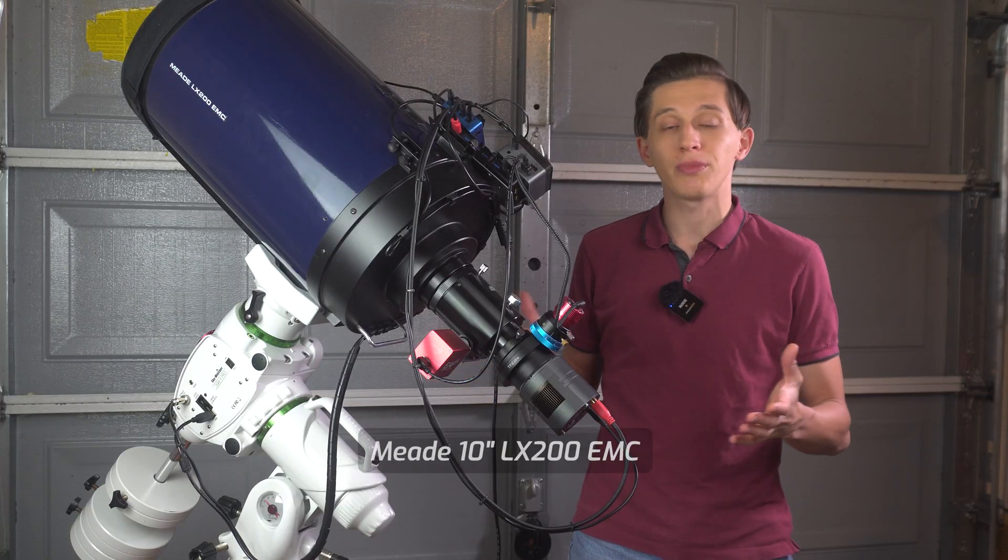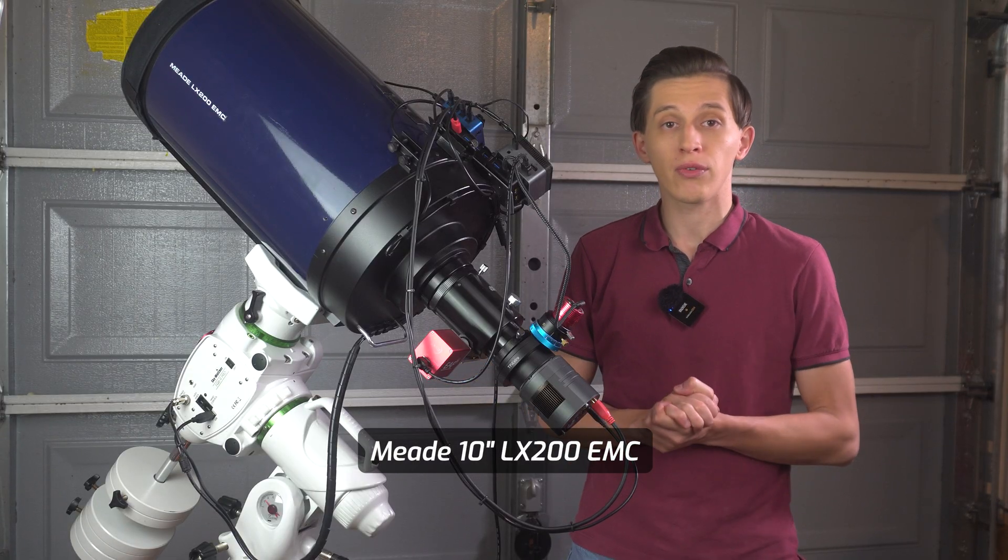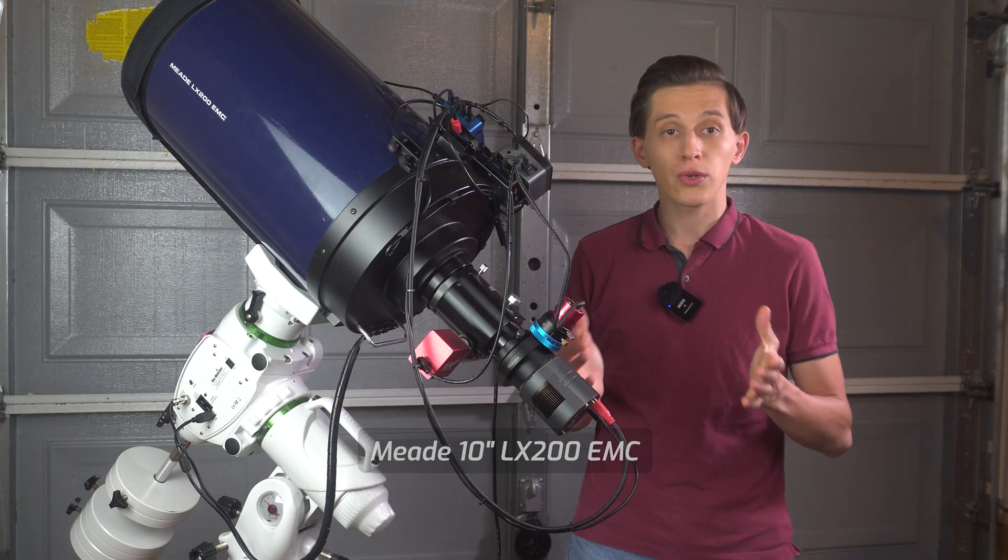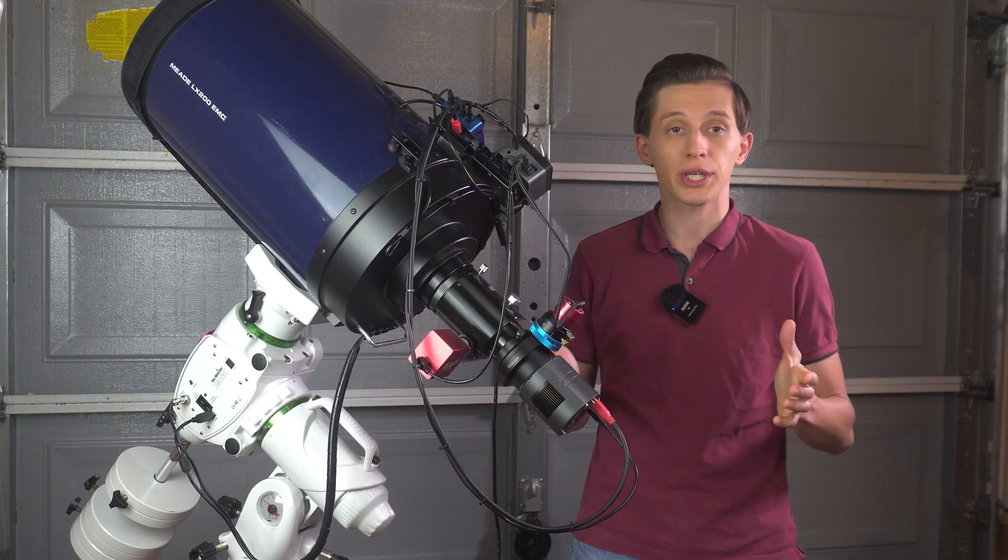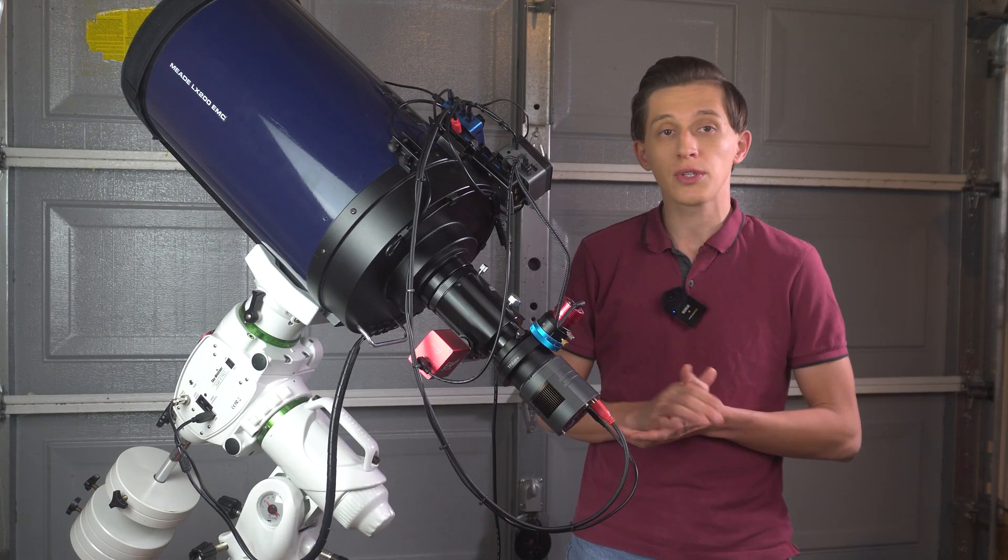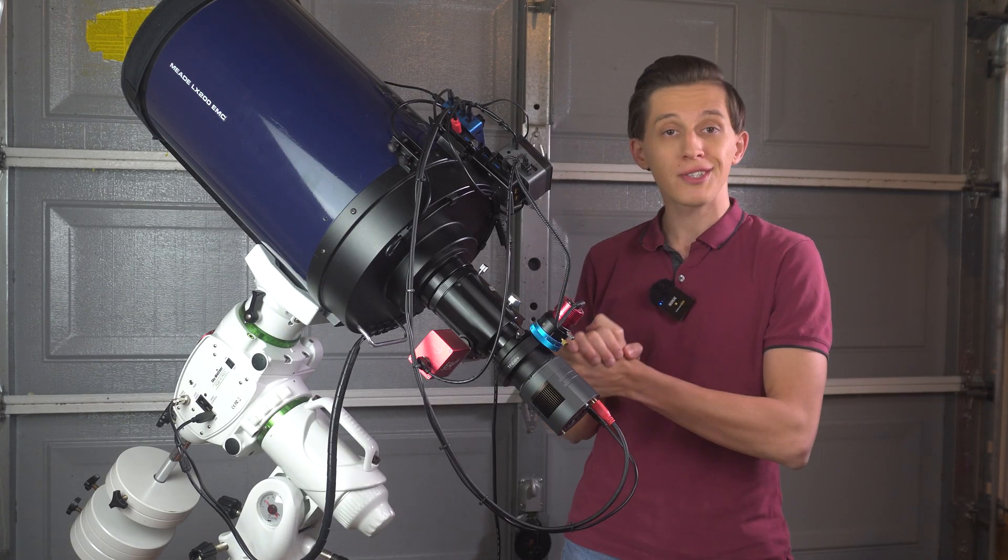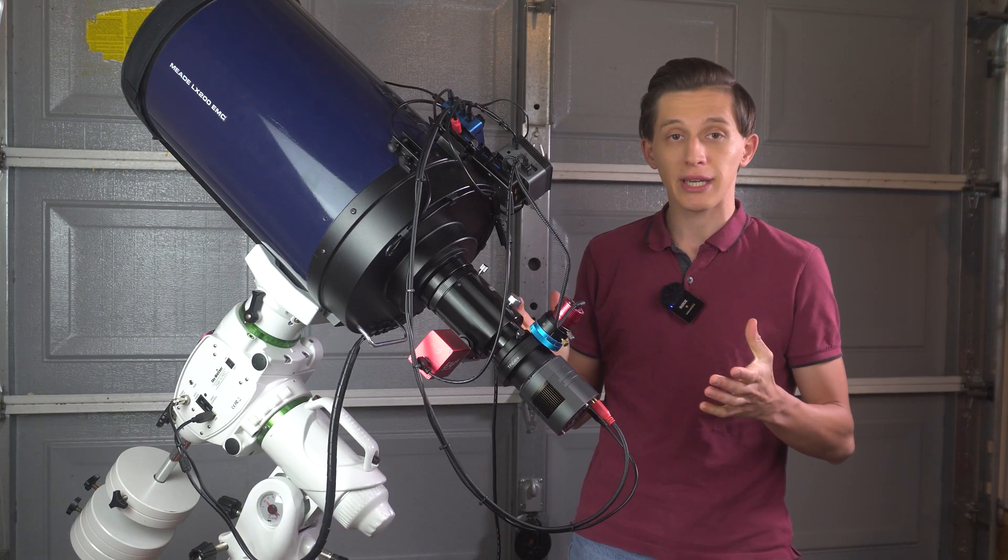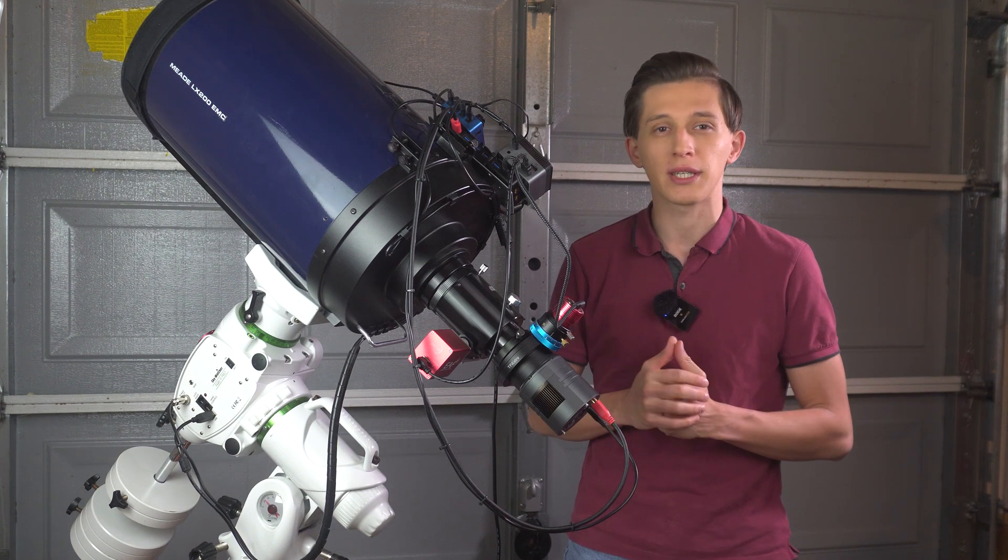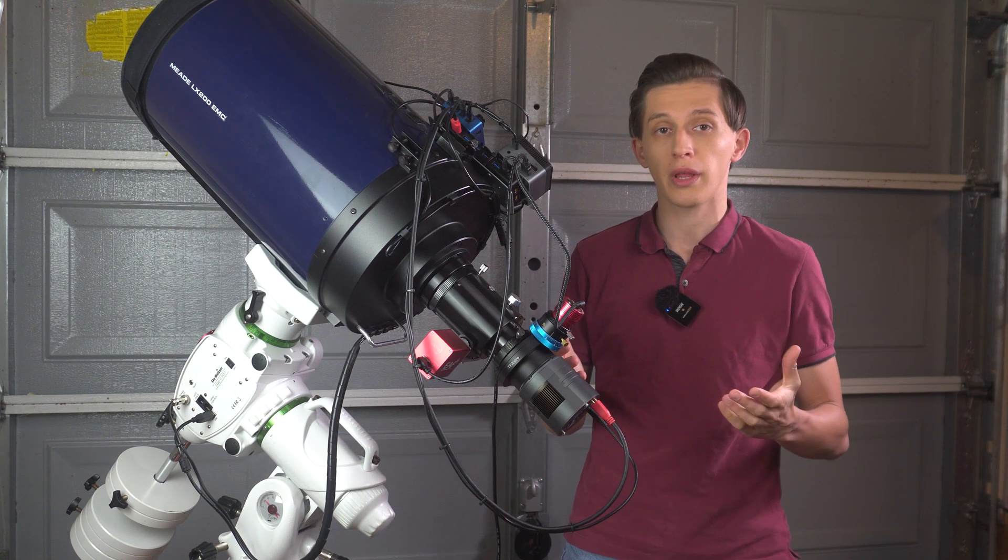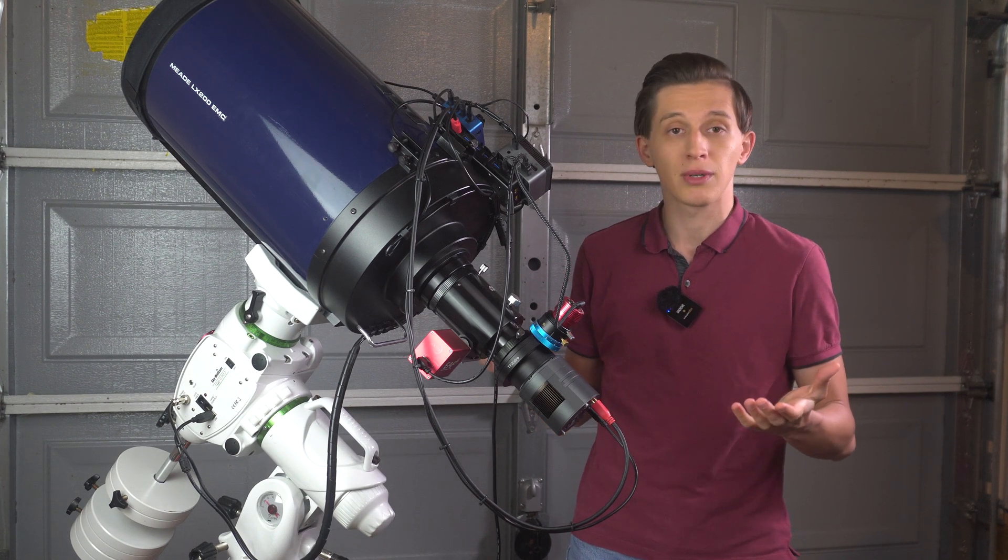So here I got a 10-inch Meade LX200 EMC that I've owned for a few years now. Originally it came on a dual fork mount, however I decided to defork it and placed it on an equatorial mount. I mostly used it for planetary imaging in the past, but this year I decided to build a deep-sky imaging rig using it. I simply began by taking some test images at native 2500 mm focal length just to see what's possible with the telescope.